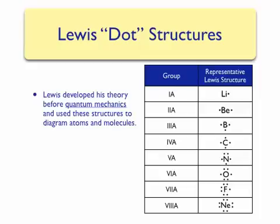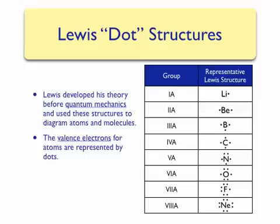He preferred to think of atoms as tiny cubes, with each vertex of the cube holding one electron. Therefore, a whole atom could hold up to eight electrons in its outermost shell. He based this model very loosely on the Bohr model. This allowed Lewis to very simply diagram atoms by using dot structures, where he represented the valence electrons as tiny dots surrounding the atomic symbol for a given atom.